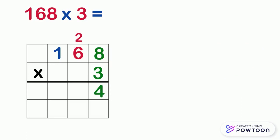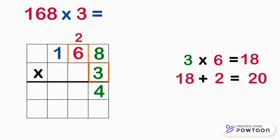Now we will multiply 3 by the 10's digit, which is 6. 3 times 6 equals 18. Then add the carry, which is 2. It gives us 20. Don't forget to cross the carry in order not to use it again. Similarly, we will write 0 in the 10's place in the answer box, and we will carry 2 over the 100's place.